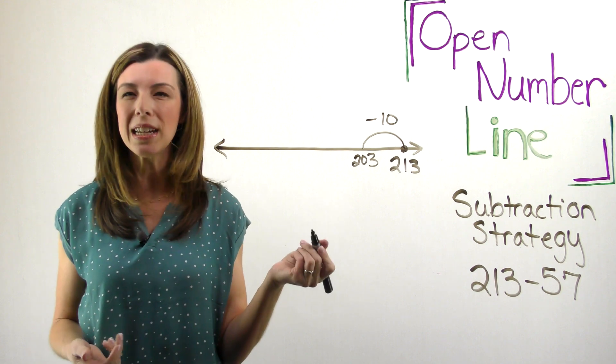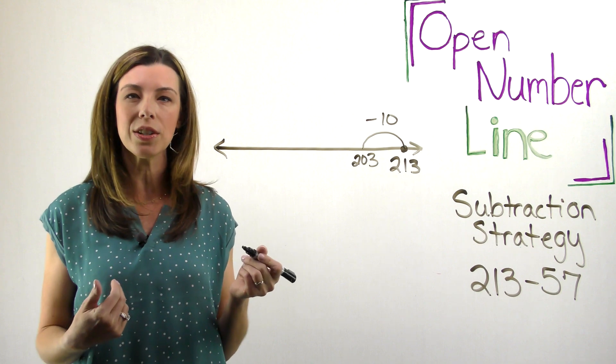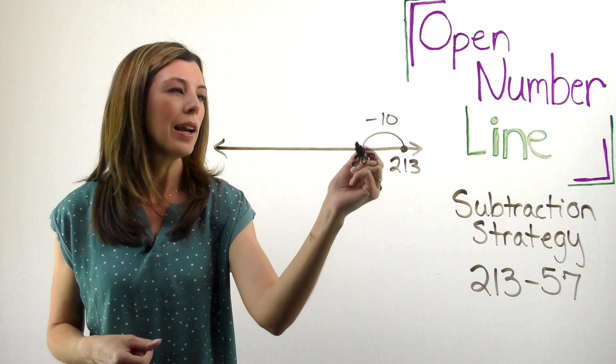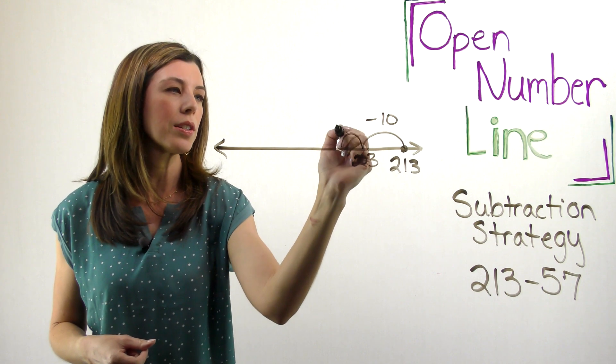Another idea might be just to get to 200 because I know once I get to 200, then I'm at a really friendly number and I can subtract some larger numbers at that point. So I'm going to go ahead and do that and just subtract 3.